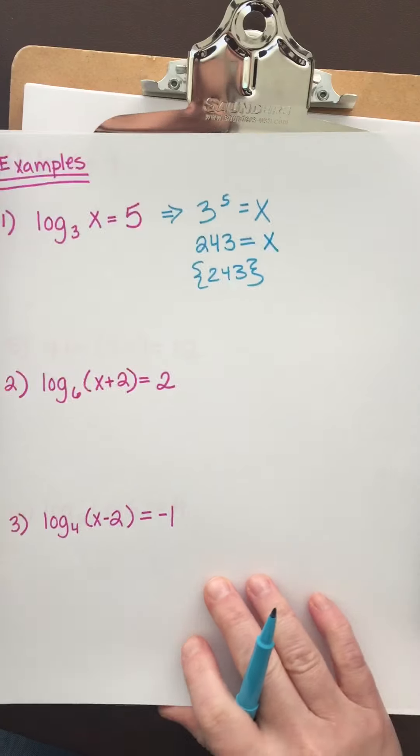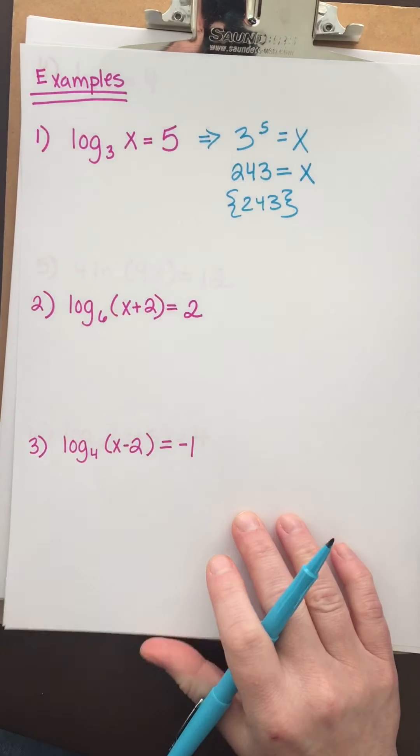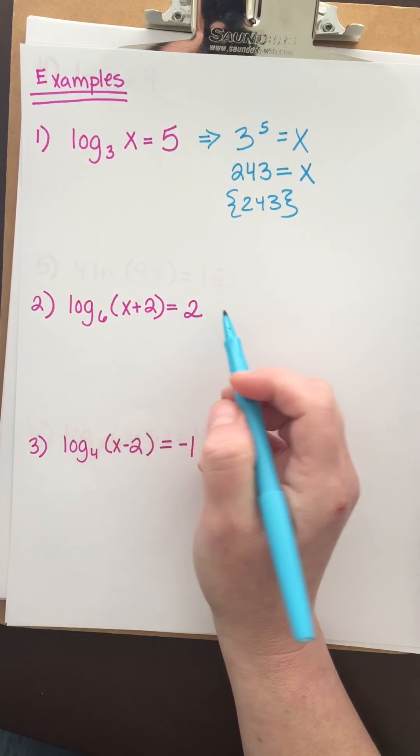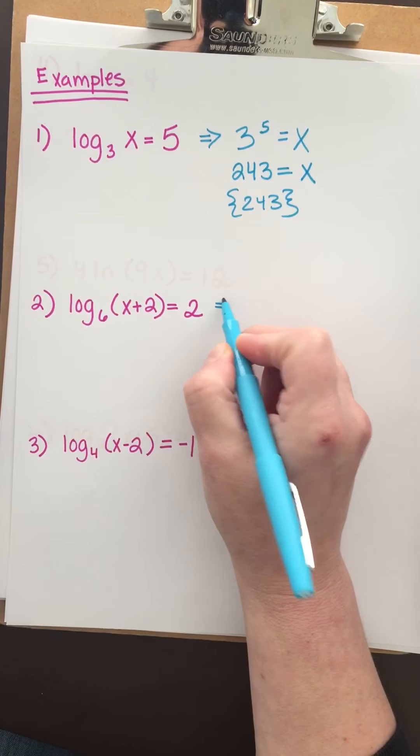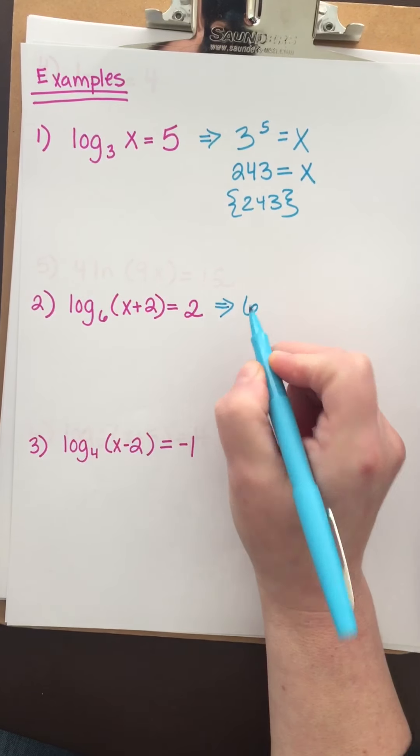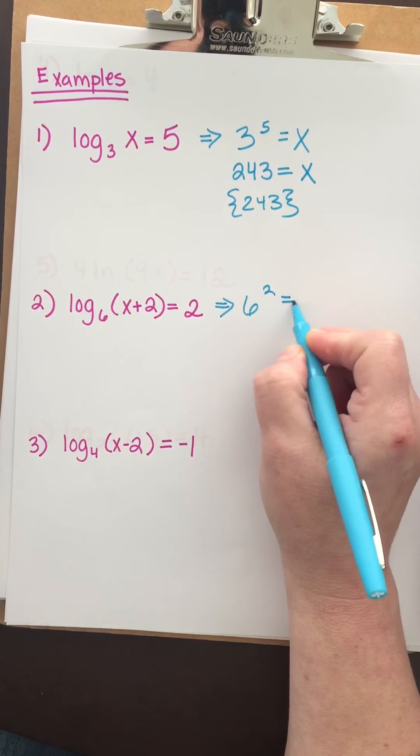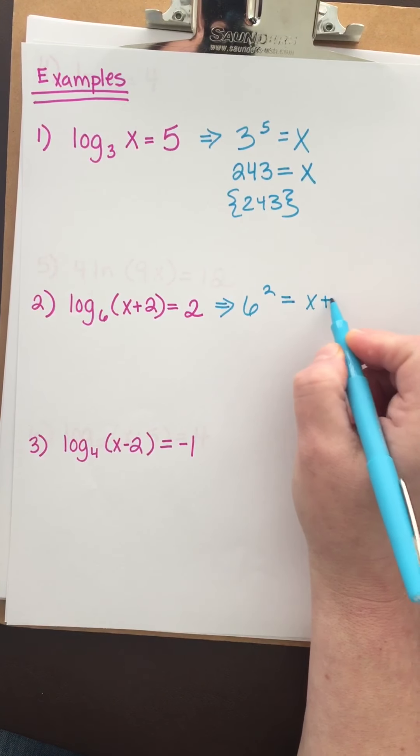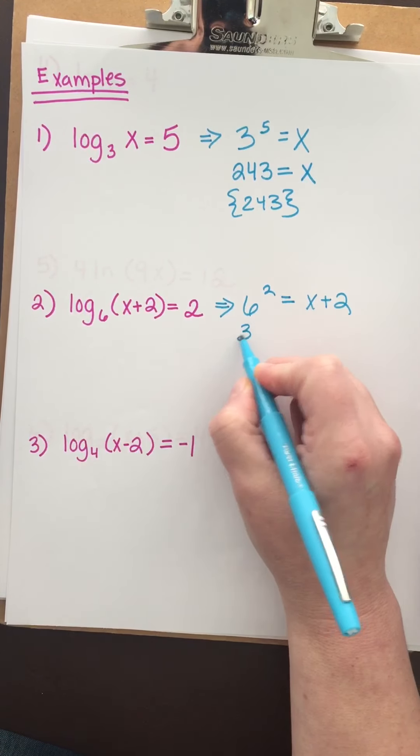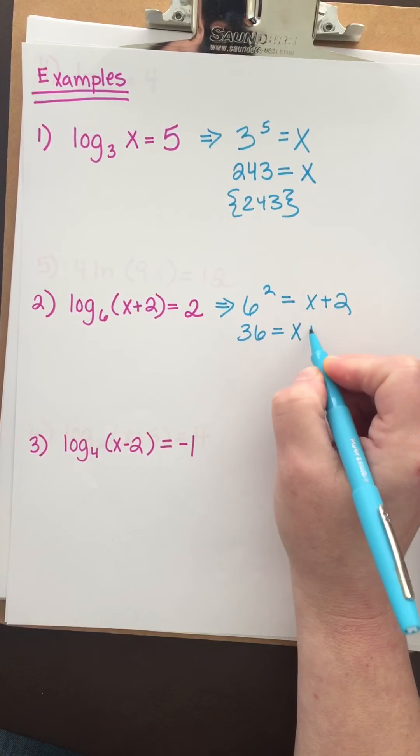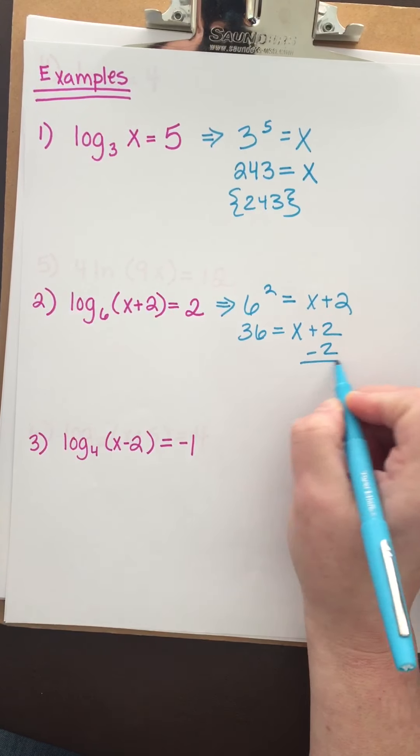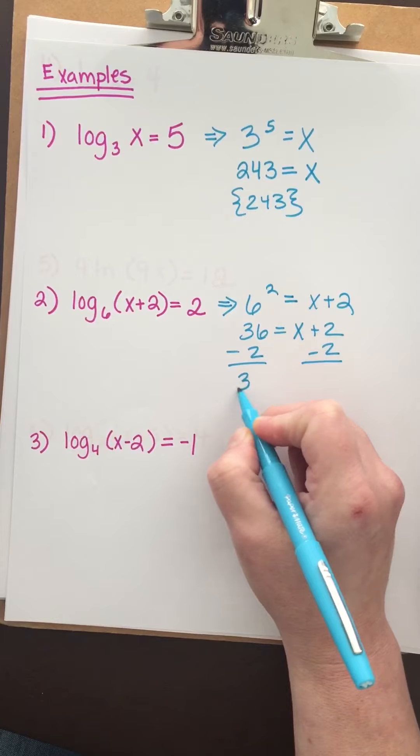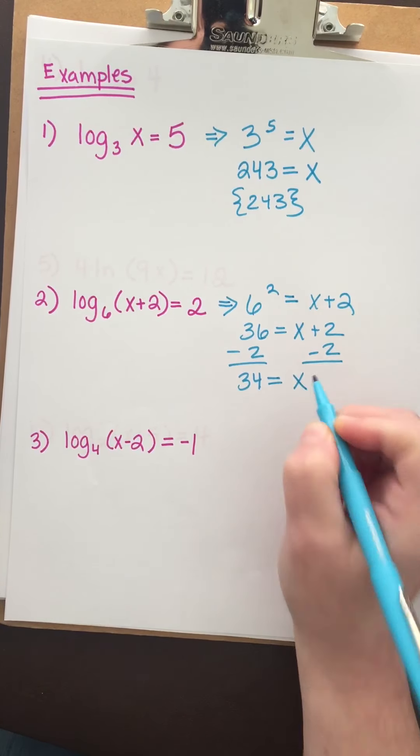For the next example, we have log base 6 of (x plus 2) equals 2. Changing to exponential form, we get 6 raised to the 2 equals x plus 2. 6 squared is 36. To undo addition, we subtract, and we get x equals 34.